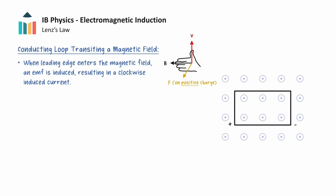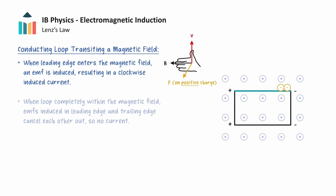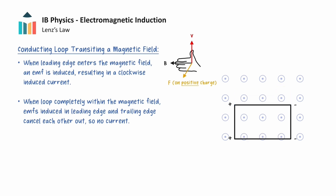When the loop moves completely within the field, magnetic forces will also act on the free electrons in the trailing edge of the loop. As with the leading edge, electrons will be pushed to the right-hand side, making the left-hand side of the trailing edge positively charged. But since this is a uniform magnetic field, the induced EMFs on both the leading edge and trailing edge will have the same magnitude. These EMFs cancel each other out, and no current will be induced in the loop while it moves completely within the magnetic field.